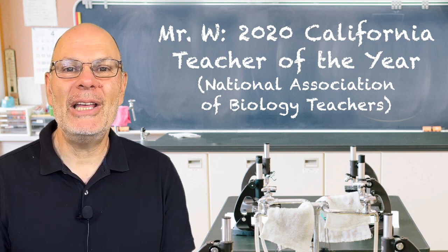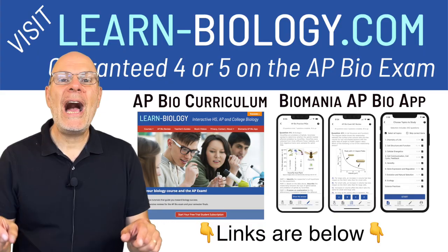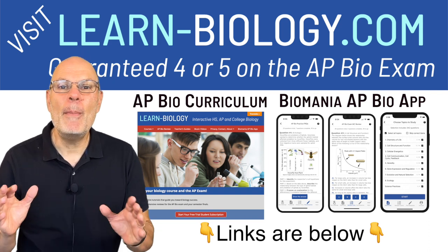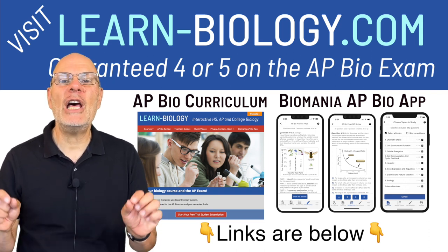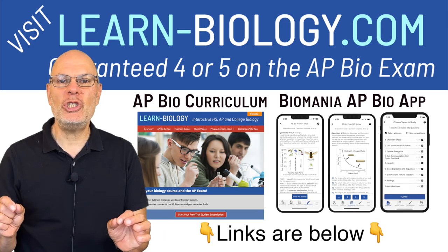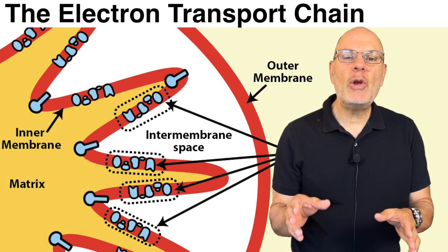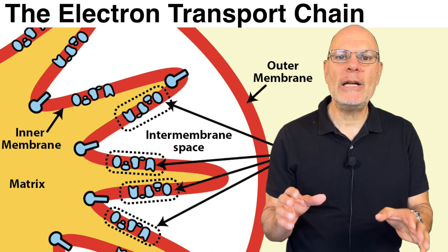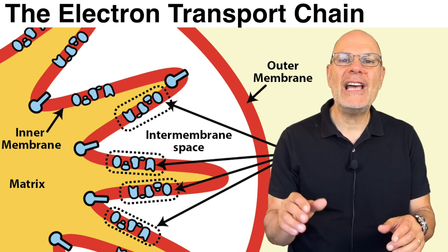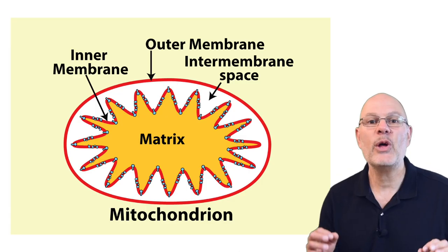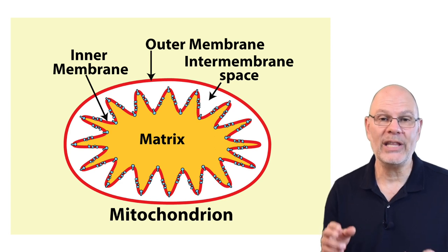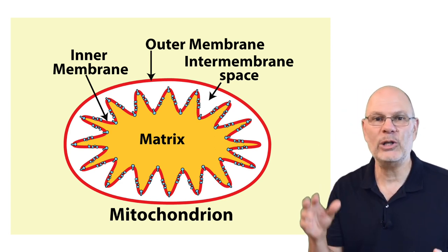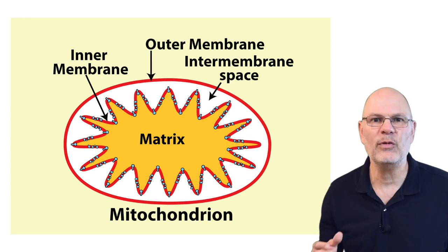I'm Mr. W, a retired AP biology teacher. I created this channel, the Learn-Biology website, and the Biomania AP Bio app to help you crush your biology course. The electron transport chain is a series of enzymes embedded in the inner mitochondrial membrane organized in a linear array. There are thousands of these arrays along the inner mitochondrial membrane. That's partly why that inner membrane is so intensely folded.